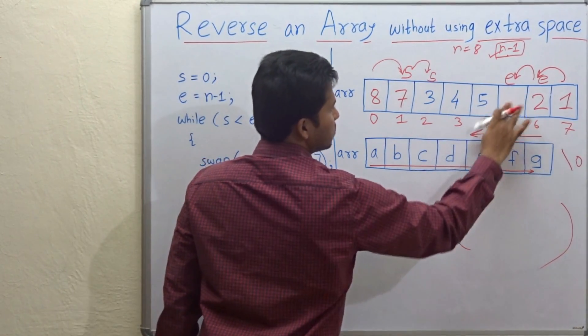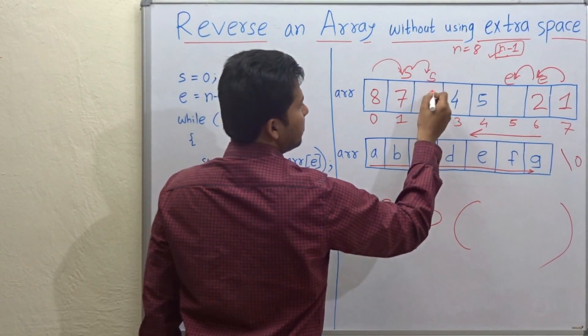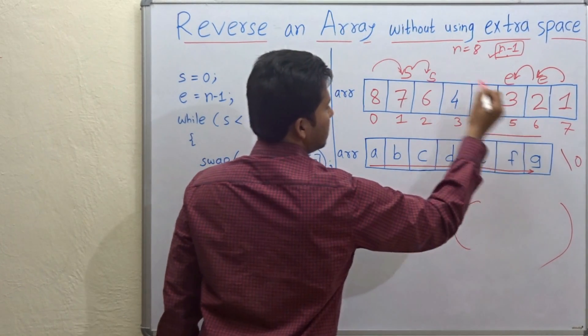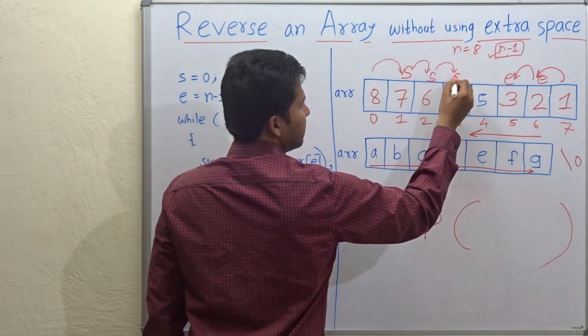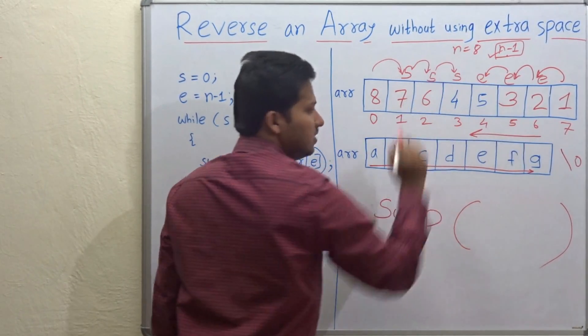Now 3 and 6. So swap. So it will be 6 and 3. Increment S and decrement E.